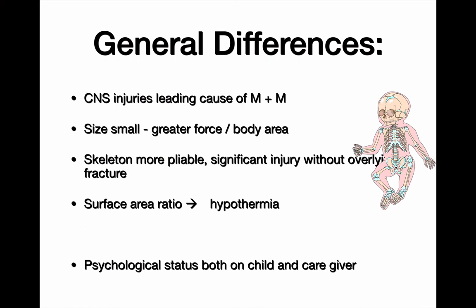We do use up the golden hour, especially now when we're doing FAST ultrasounds, placing imaging-guided lines, and trying to give tranexamic acid if there's evidence of bleeding. With all the adjuncts we have, it does take 40 minutes to an hour to coordinate final disposition. You also need to understand there's a lot of psychological burden on both the child and the caregiver.